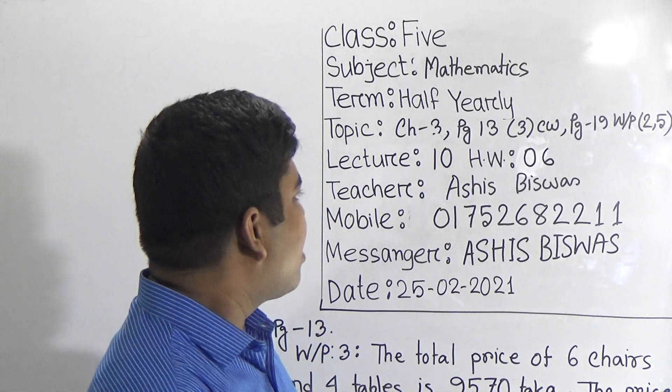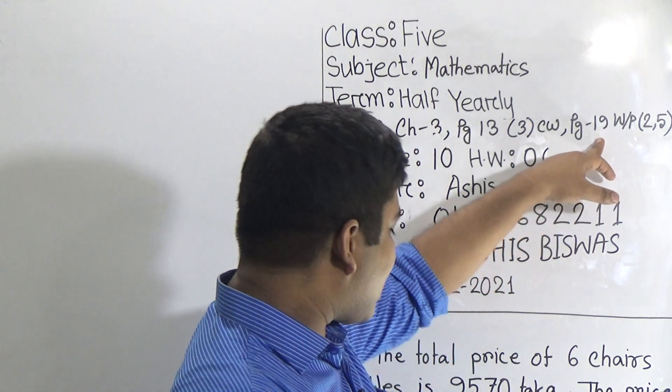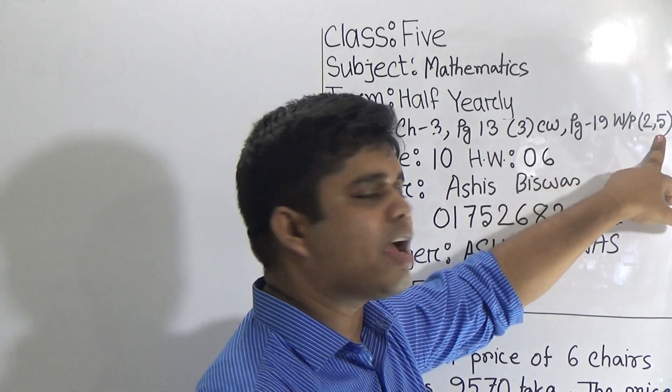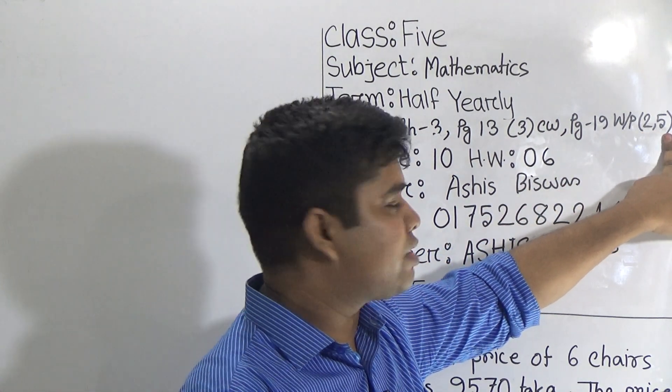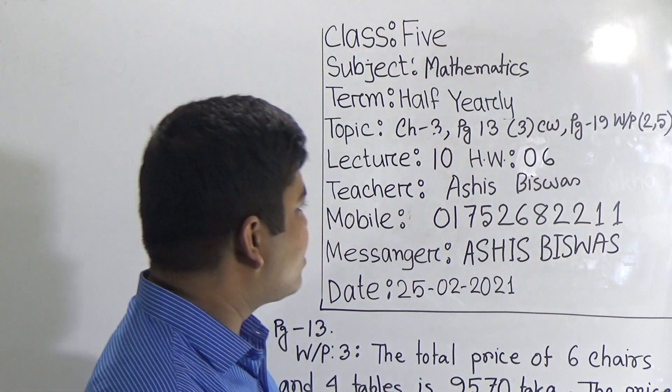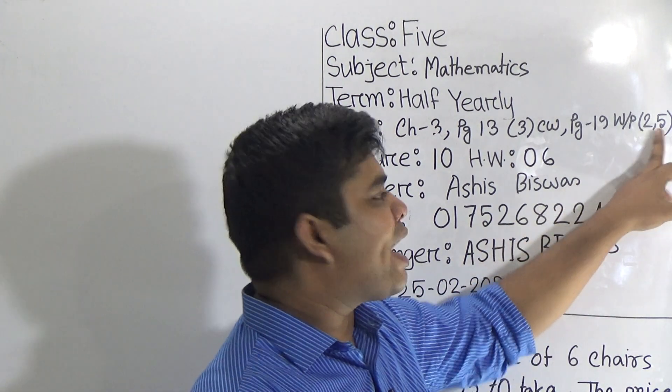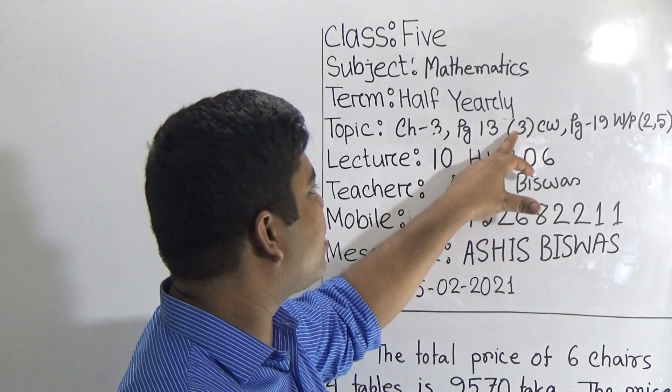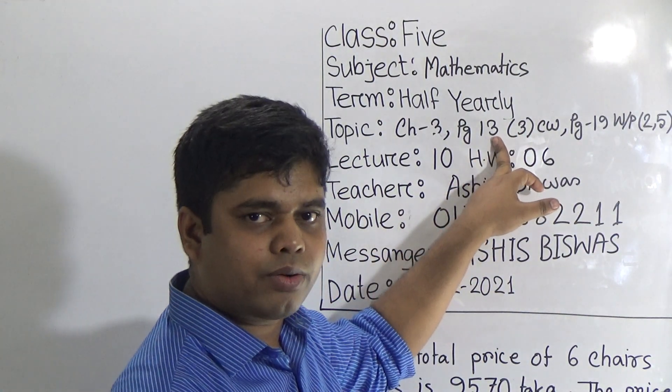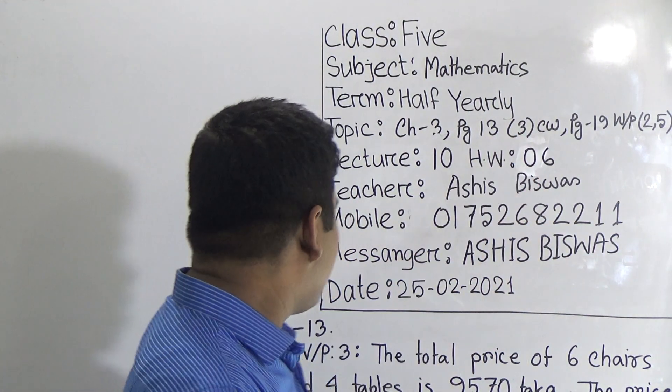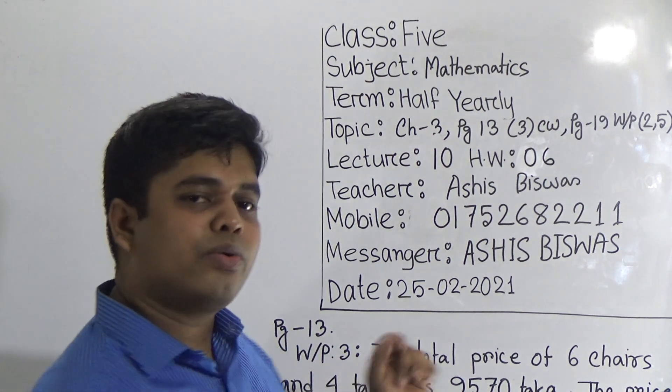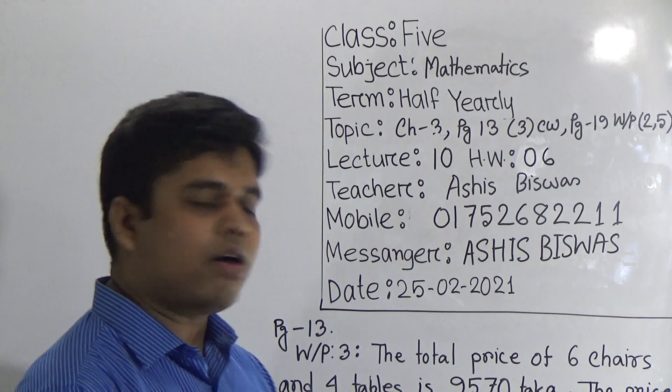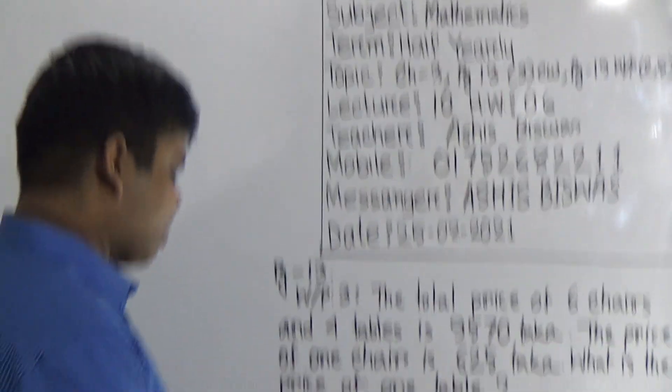And from page number 19, exercise 3, word problem number 2 and 5 will be your SW. My dear students, please notice, word problem number 2 and 5 is just similar as question number 3 of page number 13. If you can solve word problem number 3, then you can easily solve word problem number 2 and 5 of page number 19.